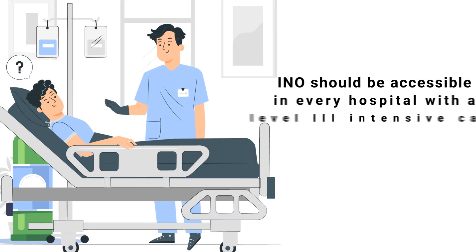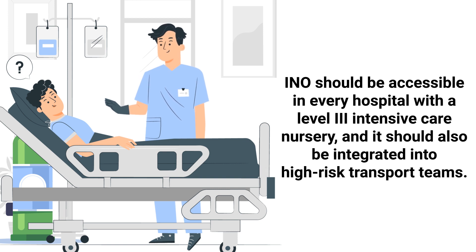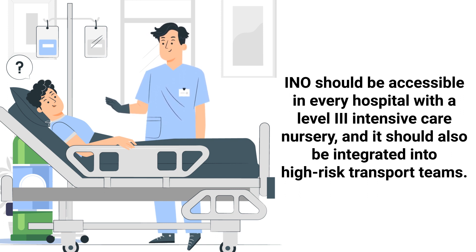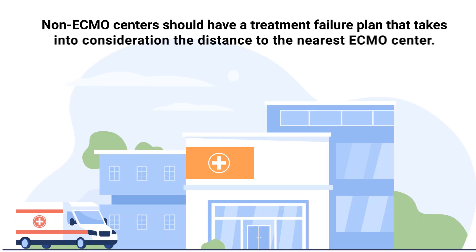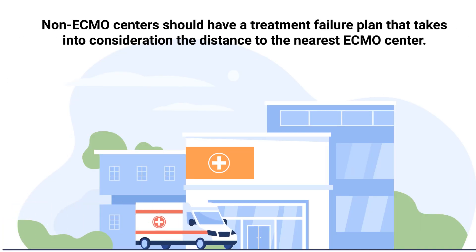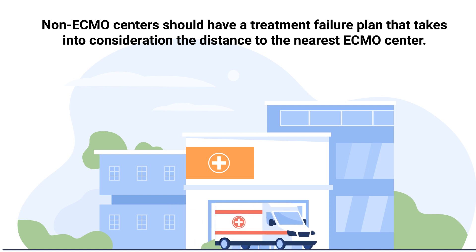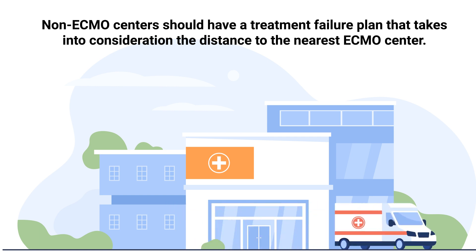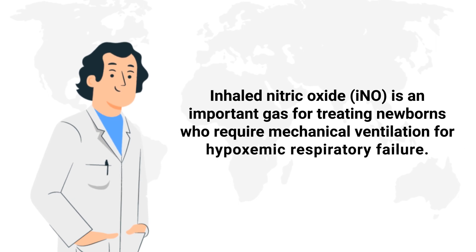When the drug is discontinued, the patient may experience a rebound effect and withdrawal symptoms, which can be mitigated by increasing the delivered FiO2. In general, inhaled nitric oxide should be accessible in every hospital with a level 3 intensive care nursery and should be integrated into high-risk transport teams. Non-ECMO centers should also have a treatment failure plan that takes into consideration the distance to the nearest ECMO center.